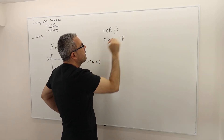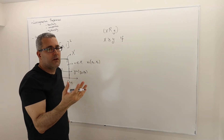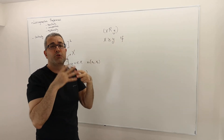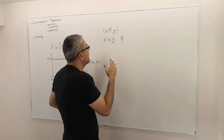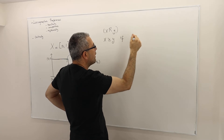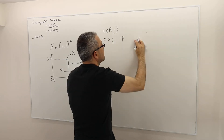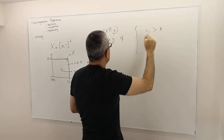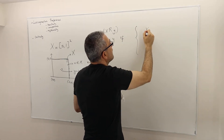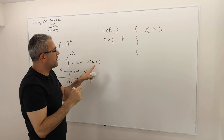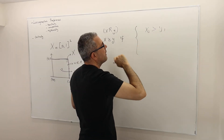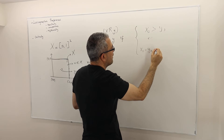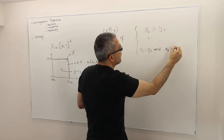So x is at least as good as y if - this is a definition, so 'if' basically means if and only if. I'm defining something, so when I use 'if,' I basically mean this statement is equivalent: the truth value is equivalent to the truth value of the second statement. So x is at least as good as y if and only if x1 is greater than y1, or x1 is equal to y1 and x2 is greater than or equal to y2.